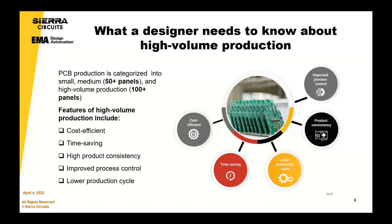The features or benefits that we get from high volume production are cost efficiencies, obviously being able to leverage economies of scale, time saving — having a prototype shop and then taking it seamlessly through prototype into medium or mass production — helps the customer get their product to market quicker. And high product consistency: the larger the volume, the more process control we can put in place, and the more we can learn from production to increase efficiency and overall effectiveness. And ultimately, a lower production cycle.